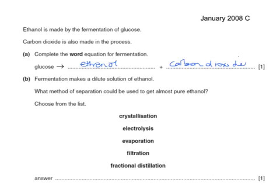Fermentation makes a dilute solution of ethanol. What method of separation could be used to get almost pure ethanol? This method would be fractional distillation.